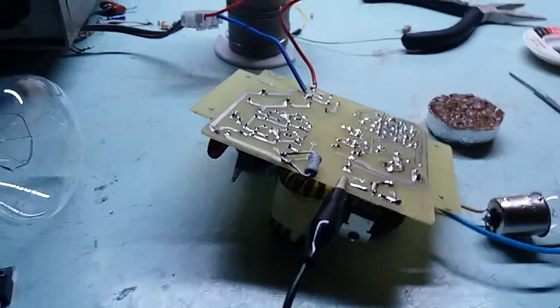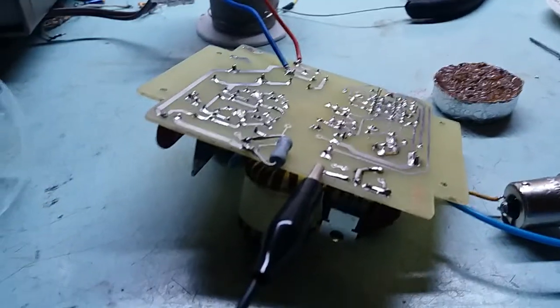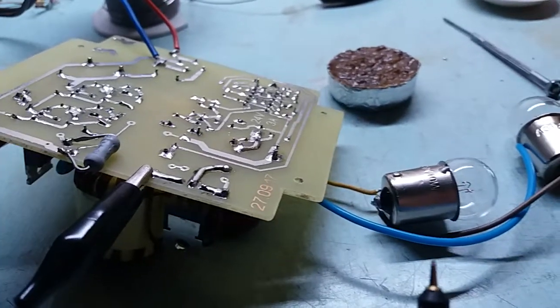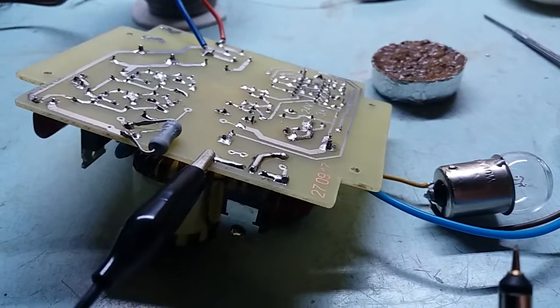You might be interested in how I calculate the values for the snubbers. Let me show you what the waveform across the secondary looks like.